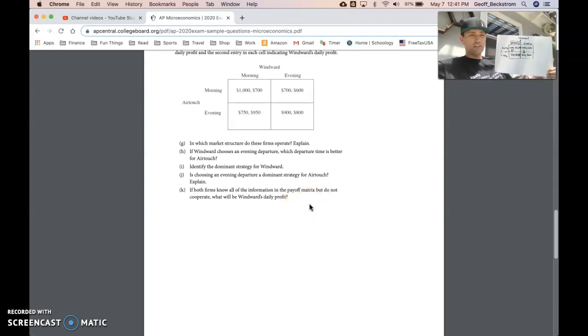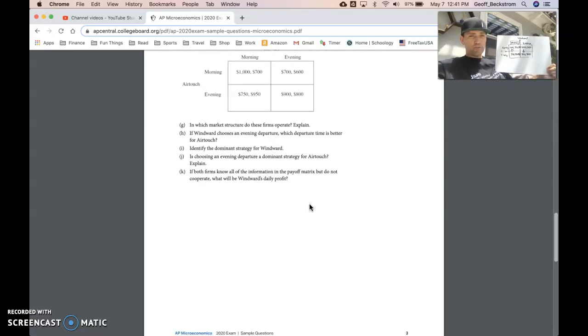And you could go on to say something to the extent of a more general statement like, Air Touch's best outcome varies depending upon what Windward chooses. If both firms know all the information in the payoff matrix, then we're going to arrive at what we call the Nash equilibrium. And in the Nash equilibrium square, in this case, that's the one that two arrows are pointing into. So if you drew the arrows earlier, like I suggested, and like I really think you should do in order to never get anything wrong on these questions, it's the box with two arrows pointing into it. If there's two boxes with two arrows pointing into them, then we don't have a Nash equilibrium or a solution, but we rarely see those questions set up like that by the college board on the AP test. So in this case, Windward's daily profit is going to be 700. That's the correct answer for part k.